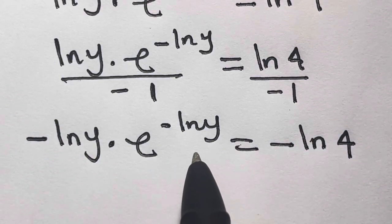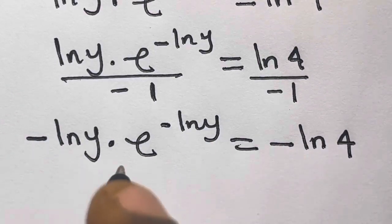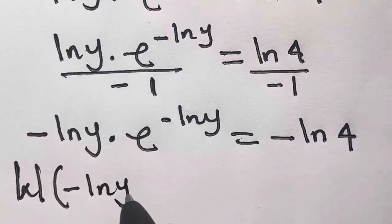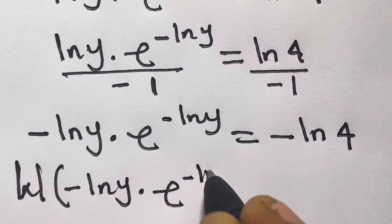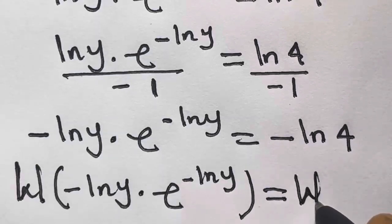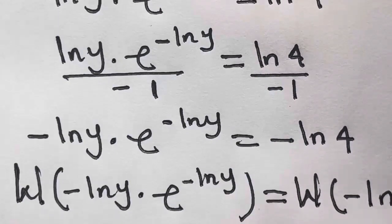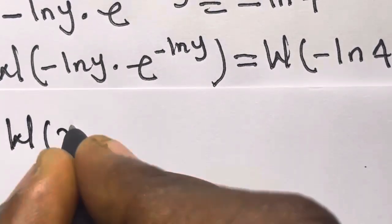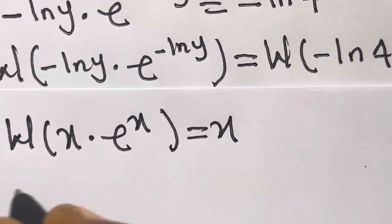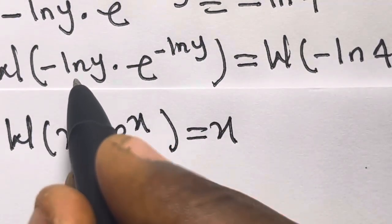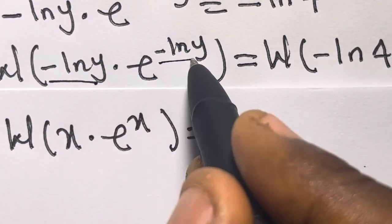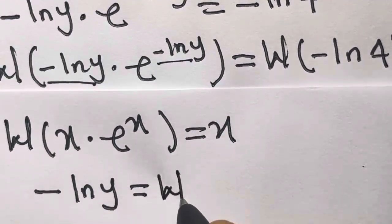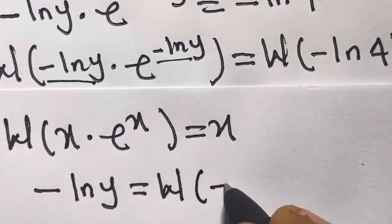So it is easy for us to now introduce the Lambert W function to both sides. We are going to have the Lambert W function of minus ln(y) times e^(-ln y) equals the Lambert W function of minus ln(4). By applying the Lambert W function — W(x·e^x) = x — we have minus ln(y) equals W(-ln 4).